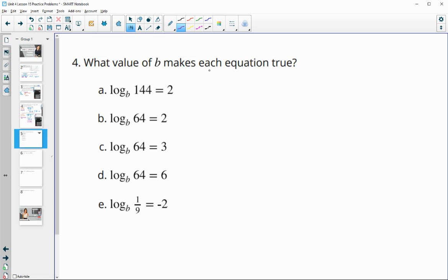Number four, what value of B makes each equation true? So remember, B would be to the second power to get 144. So what base here would give us an exponent of two that would get us to 144? And you can write it in exponential form if you want to. B to the second power would equal 144. And so that's going to be 12. So what number squared gets us to 64 essentially is what this one is asking. So that's going to be eight because eight to the second power gives us that 64.